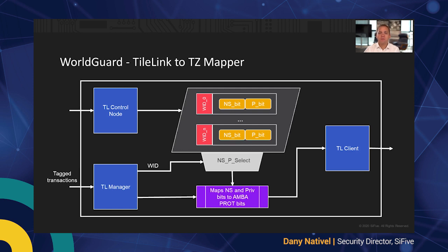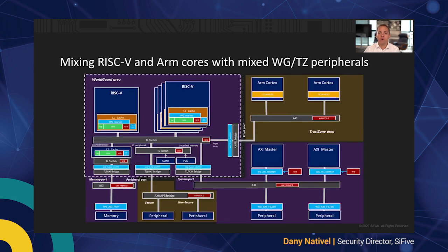In some situations it might be required to not only swap an ARM core with a RISC-V core, but also to swap a TrustZone-enabled memory or peripheral with a WorldGuard-enabled version. By using the right mapper, we can mix and match TrustZone-enabled peripherals or memory with WorldGuard-enabled versions to enable more fine-grained control and flexibility on system partitioning. In this example, we have a bunch of ARM cores on the front port as well as TrustZone-enabled APB peripherals, while the rest of the system is mostly based around WorldGuard-enabled cores and peripherals.